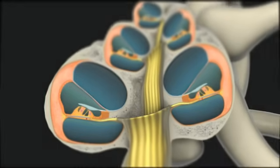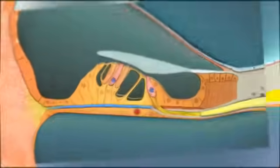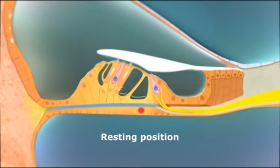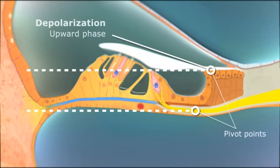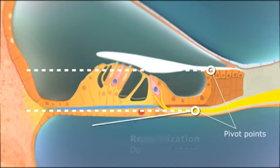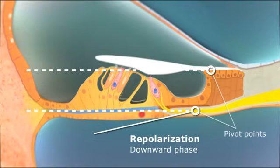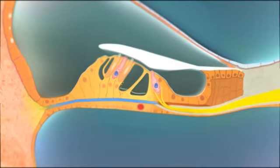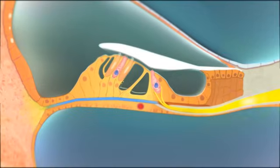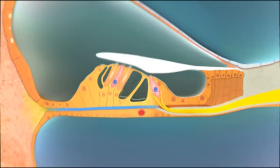The hair cells are located between the tectorial and basilar membranes and are stimulated by the shearing force between the two caused by the pivot point of the two membranes. The pivot point of the basilar membrane becomes displaced, and the tectorial membrane moves across the tops of the hair cells, causing the stereocilia to bend.